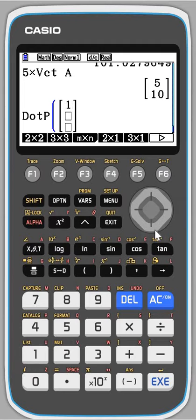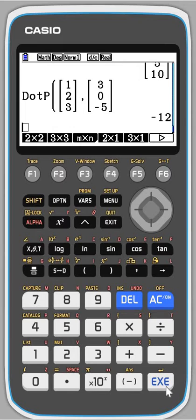I'll go 1, 2, 3. Then I'll press comma because dot product of two different vectors. I'll press another 3 by 1. Let's do 3, 0, negative 5. That'll do. And then execute. And it's worked out the dot product.